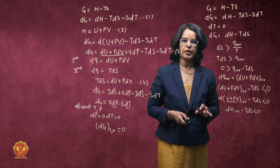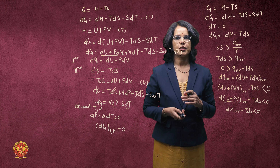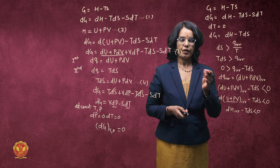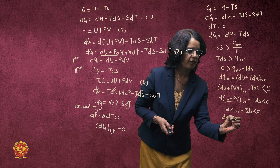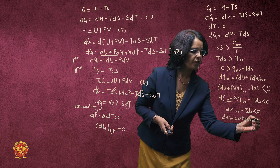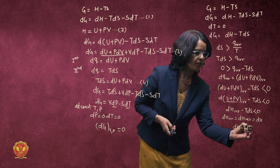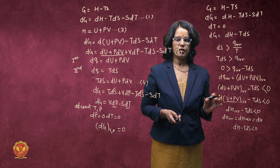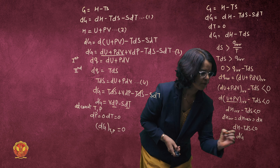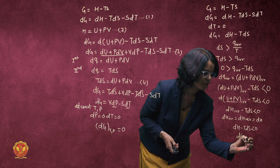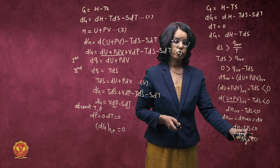We know that enthalpy is a state function, which depends only on the initial and final states. It does not matter whether your process is reversible or irreversible — there will be no difference in the dH value. So in each condition we can simply write dH. Therefore, dH minus TdS equals dG, and for an irreversible process, dG is less than zero.